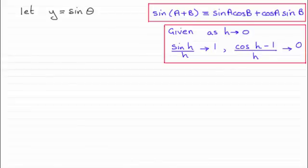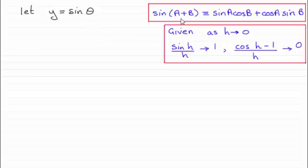In this video I want to show you how we can take y equals sine theta and differentiate it from first principles to get the result that dy/dθ is equal to cosine theta. What I'm going to be assuming throughout this video is that you're familiar with the sine of a plus b identity and also this result about limits where h is an angle that tends to zero.